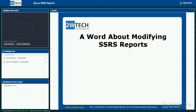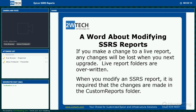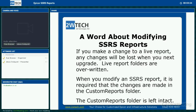Before we start, I want to have a word about reports. If you make changes to a live report, you are going to lose the changes the next time you upgrade. Always make the changes in the custom reports folder — that folder is left intact when you upgrade. Similarly, if you modify a report data definition, you should duplicate it and save it, as data definitions are also overwritten when you upgrade.